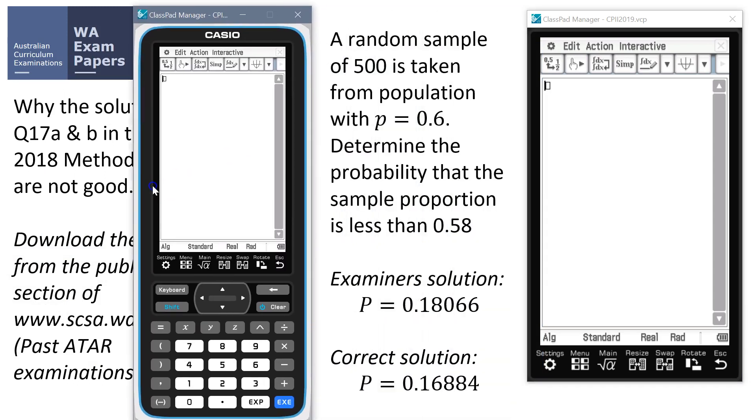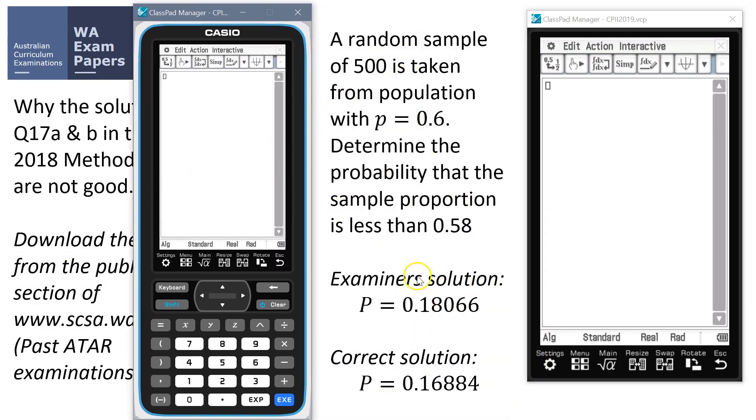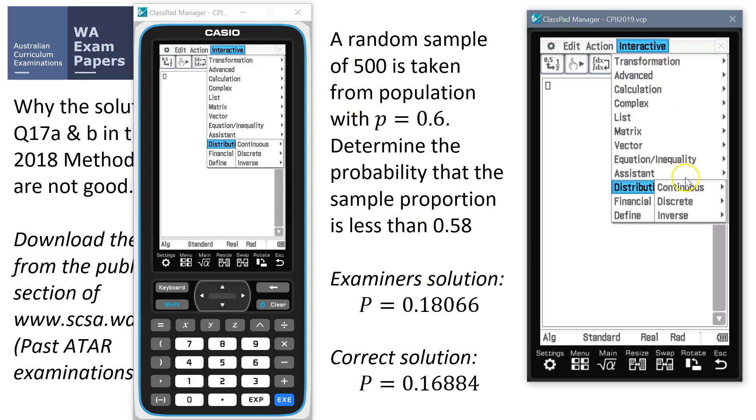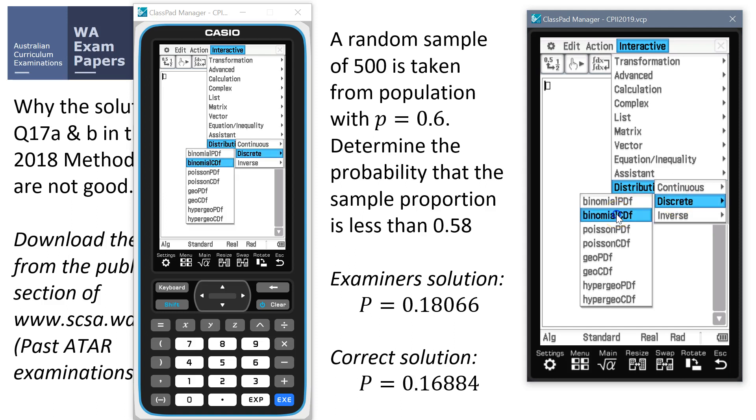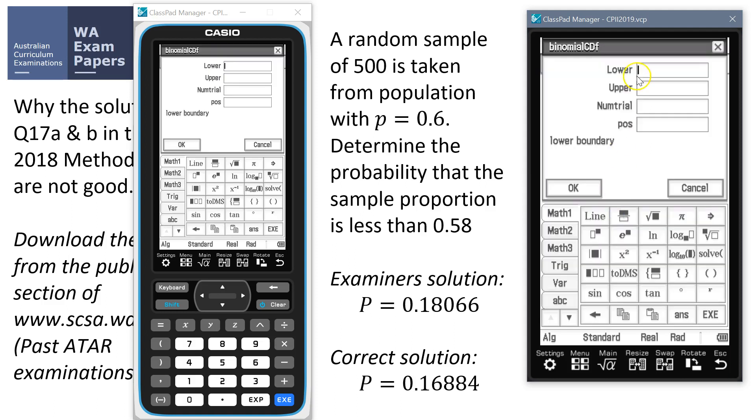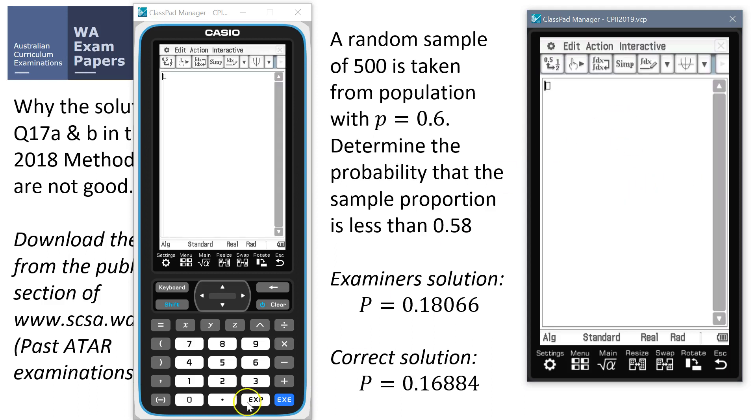So here's the question in brief, a random sample. This is their solution. Now, of course, when we take a random sample we know that 500 is binomially distributed. So if we actually calculate the answer correctly, we use the old binomial cumulative distribution. We want somewhere between 0 and the upper limit would be 0.58. What is 0.58 of 500? So to get a 58% proportion, we'd need 290 out of 500.